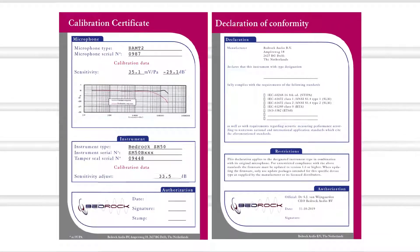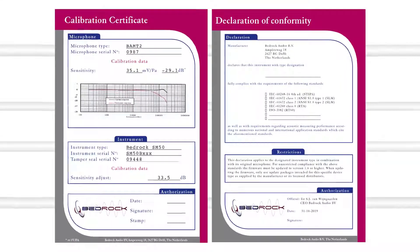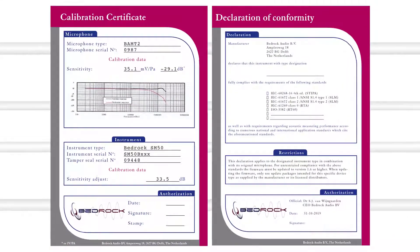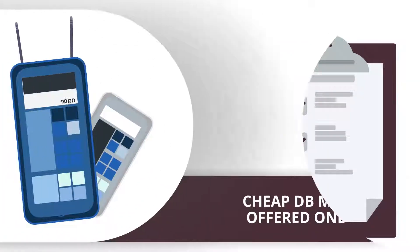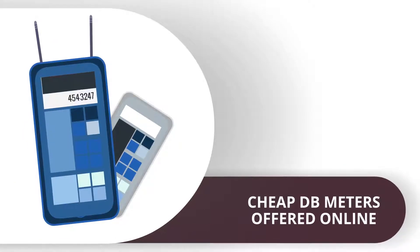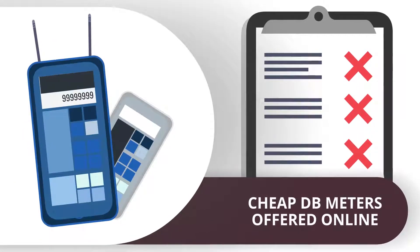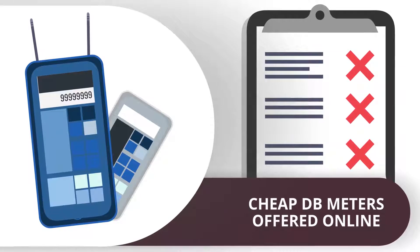All Bedrock instruments are delivered with a declaration of conformity and an individual calibration certificate so that you can prove that your instruments comply with the relevant standards. This is important since many cheap dB meters offered online will not follow the standards and should not be used professionally.